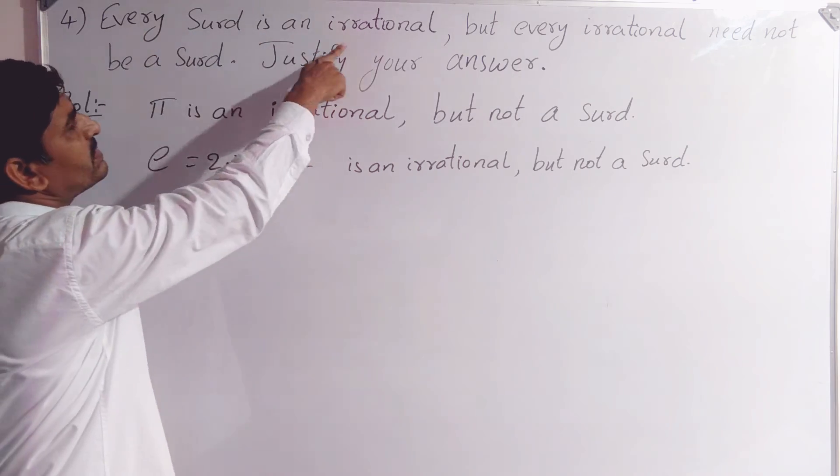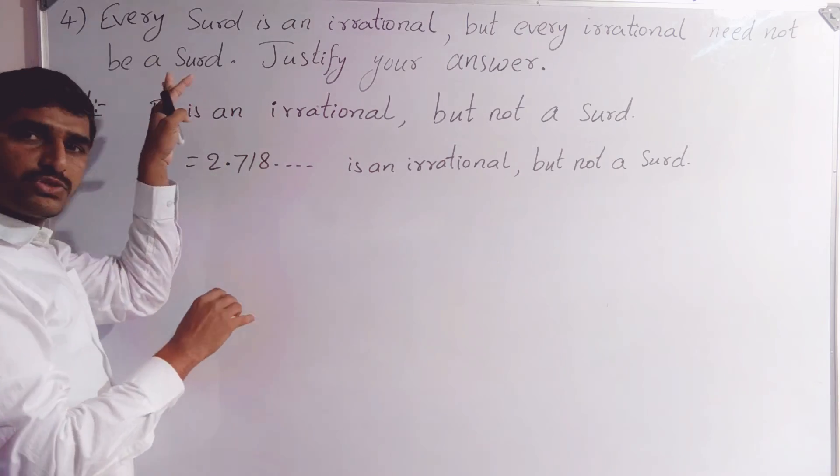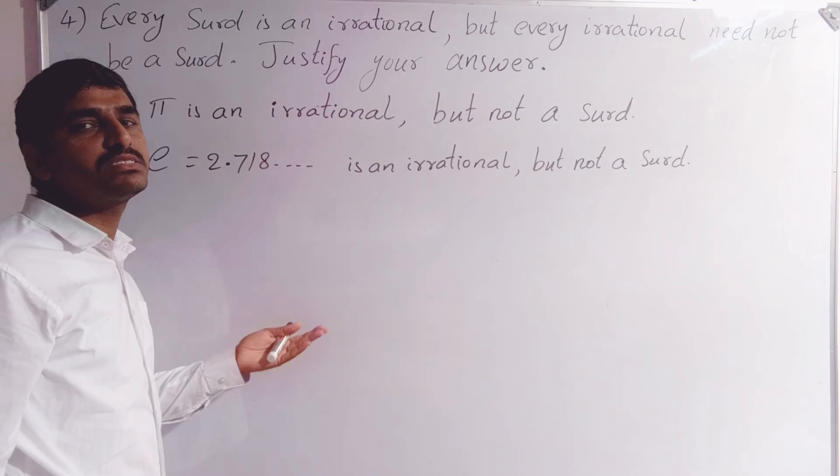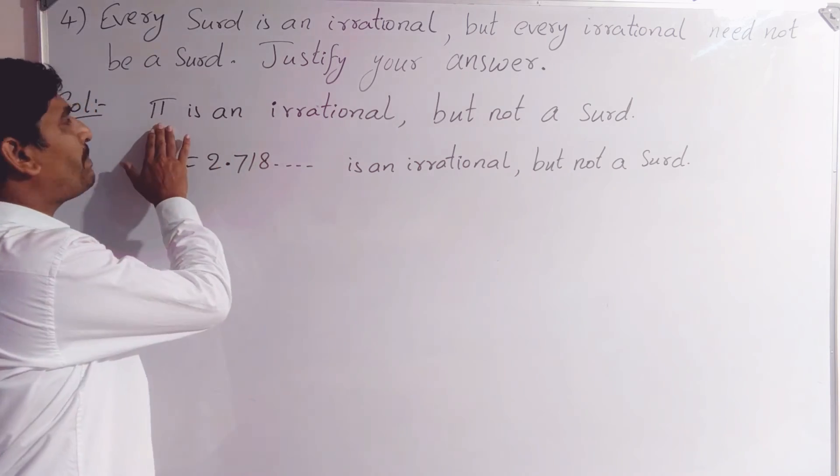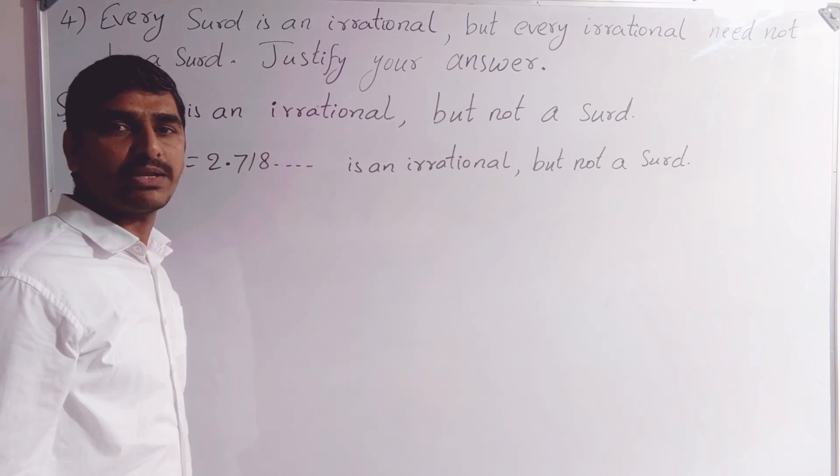Every surd is an irrational, but every irrational need not be a surd. This is true - justify your answer. How to give our answer with some examples. So phi value is approximately 3.1415 and so on.